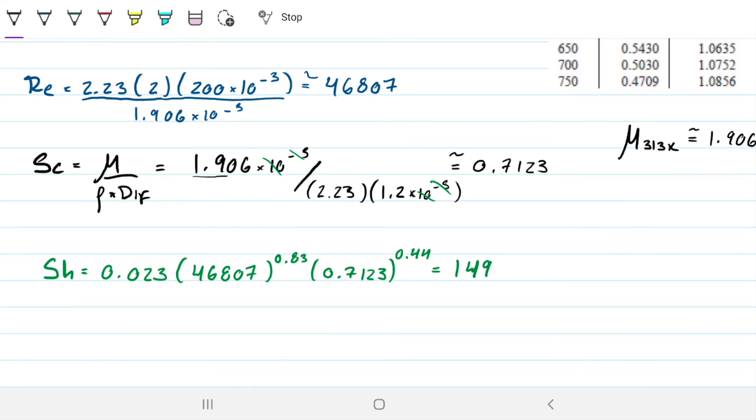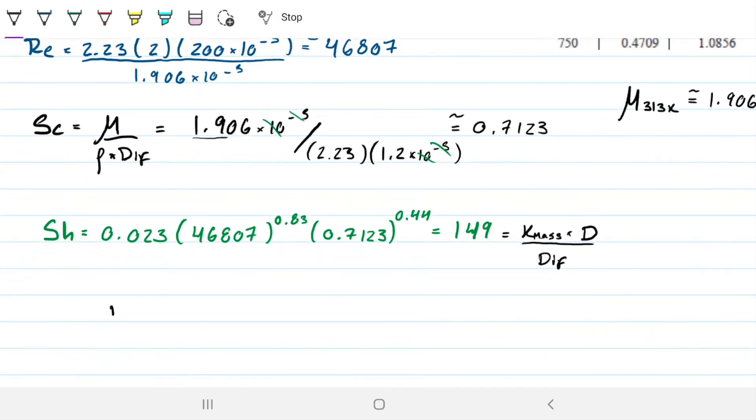We know that Sherwood has to be equal to K_mass, which is what we're looking for, the mass transfer coefficient, times characteristic length, which in this case we know to be the diameter, divided by the diffusivity. We have everything we need except for what we're looking for. So K_mass therefore is just the 149 times 1.2 times 10 to the minus 5, which is all divided by 200 times 10 to the minus 3.